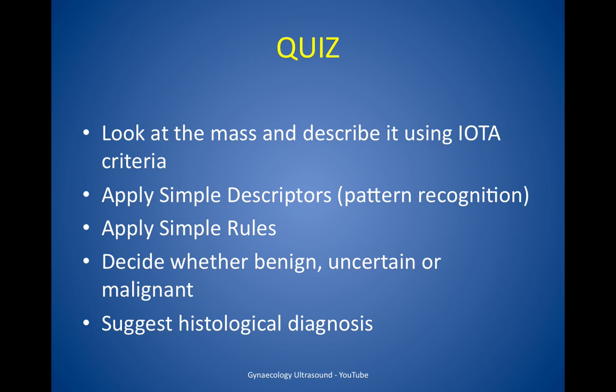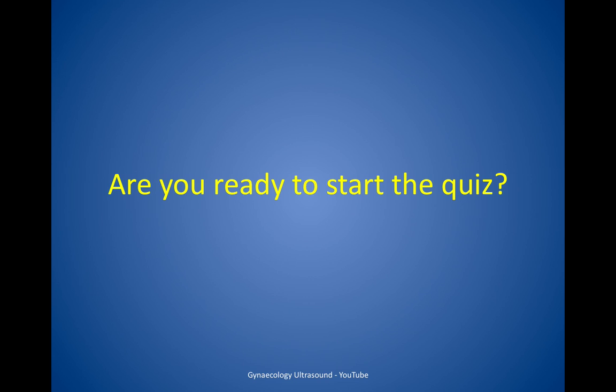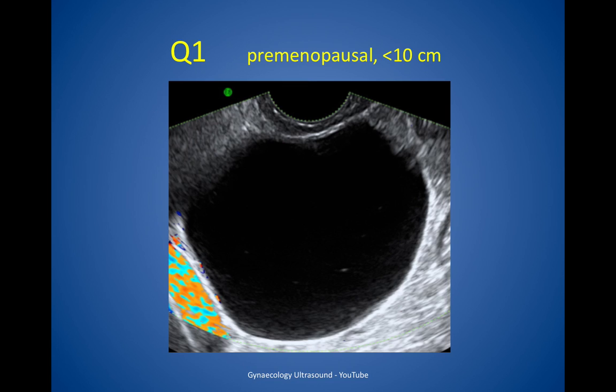So here's a quiz. Look at the mass and describe it using the criteria, apply simple descriptors, then apply simple rules, decide whether it's benign, uncertain or malignant and suggest a histology. This is a lesion in a pre-menopausal woman and it's less than 10 centimetres in diameter.